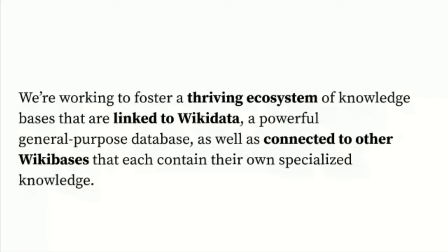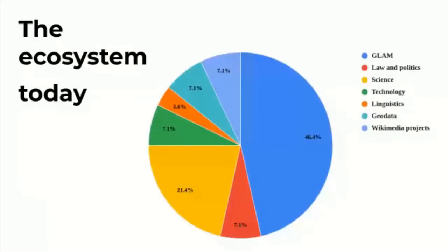If you look at the Wikibase ecosystem today, it is very heavy on GLAM — short for galleries, libraries, archives, and museums — but there are also quite a few existing Wikibase instances in science and technology, linguistics, and geodata, as well as in the Wikimedia projects themselves, with Wikidata but also Wikimedia Commons.